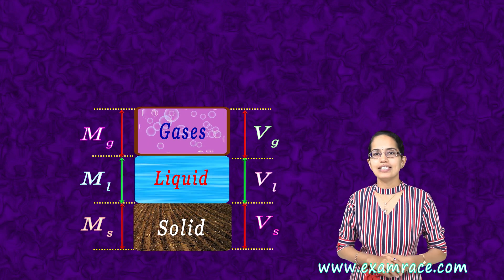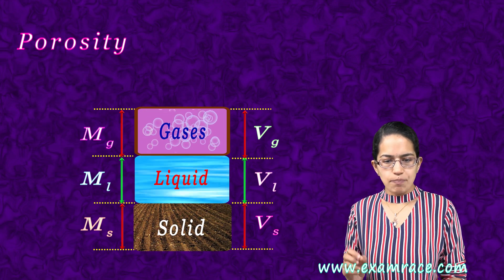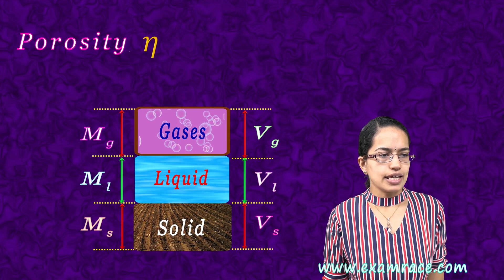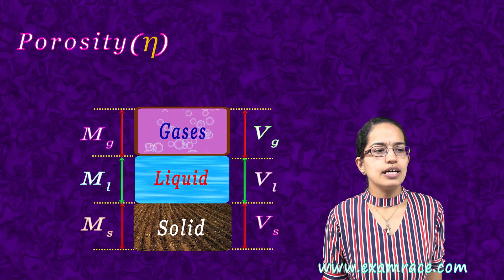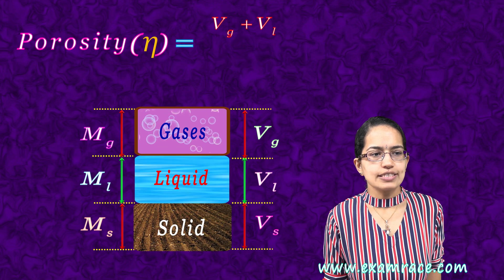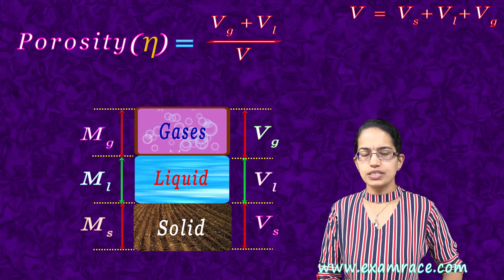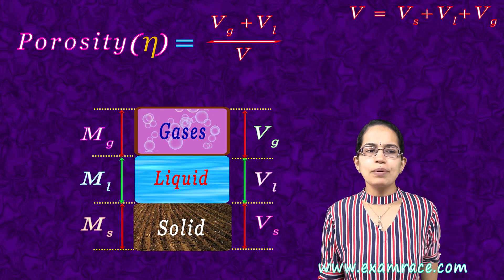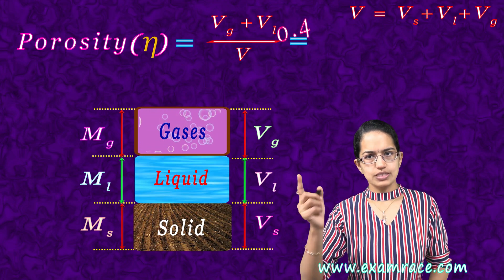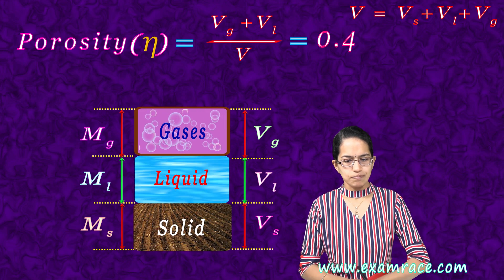First is understanding porosity. Porosity simply put is the amount of the volume of gases and the volume of water divided by the total volume that is present. Typically it turns out to be 0.4, which is a kind of typical value that we see for porosity.